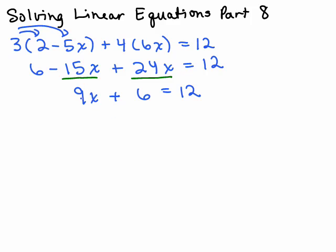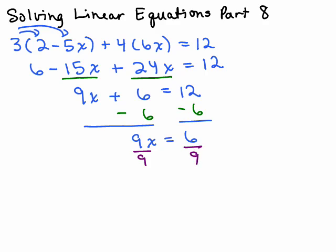Now we want to find out what x equals. Here's the x term, so I want to subtract six from both sides. We're doing the golden rule where you add or subtract the same number to both sides, giving 9x. Since 9 times x is 6, you need to find out what x is by dividing both sides by 9. Our final answer — if we reduce this fraction 6/9 by dividing the top and bottom by 3 — is 2/3.